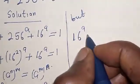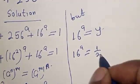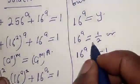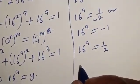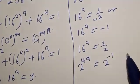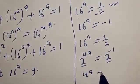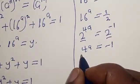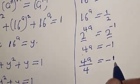So 16 raised to power a is equal to 1 over 2, or 16 raised to power a is equal to minus 1. From the first case: 16 raised to power a equals 2 raised to power 4a, which equals 2 raised to power minus 1, because 1 over 2 is the same as 2 raised to power minus 1. They have the same base, so 4a is equal to minus 1.